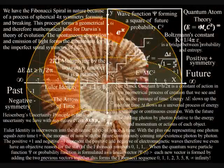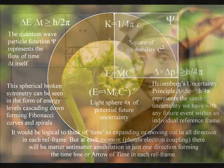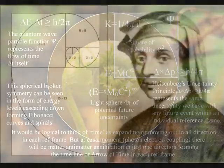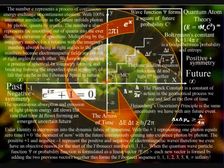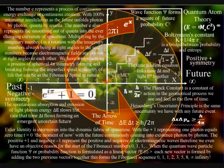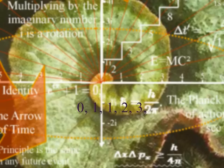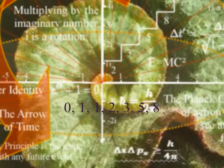This is because if the quantum wave particle function, or probability function, is reformulated as a linear vector, each new vector is formed by adding the two previous vectors together. This forms the Fibonacci sequence. In this theory, we even have an objective reason for the start of the Fibonacci numbers, with the zero in the centre of the diagram representing t equals zero, the moment of now, and the positive one and negative one representing the positive and negative of electromagnetic waves, with everything being based on one geometrical process.